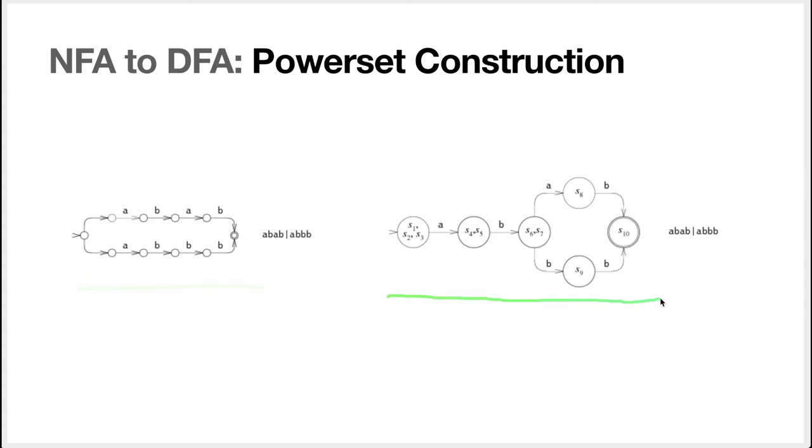So let's see how we can go from the NFA here to the DFA there. We start with these three states, which is the starting state and then two states that can be reached through empty transitions. So that's going to be our starting state in the DFA. Now that we have these states, and you see it's called S1, S2, S3, and basically S1, S2, S3.